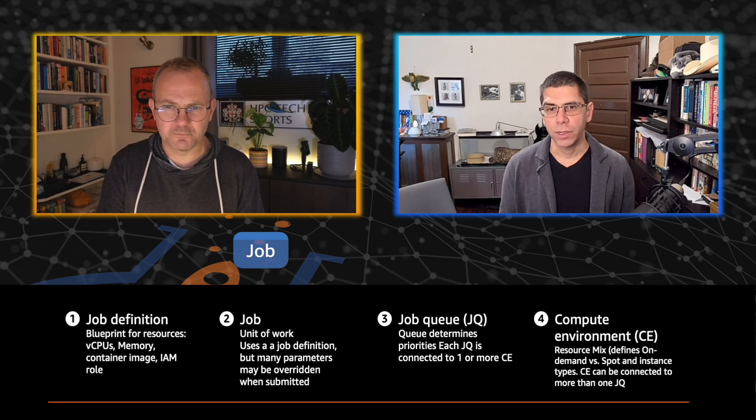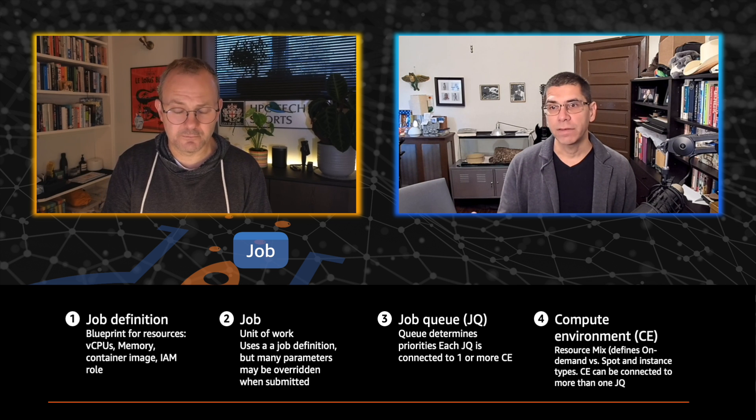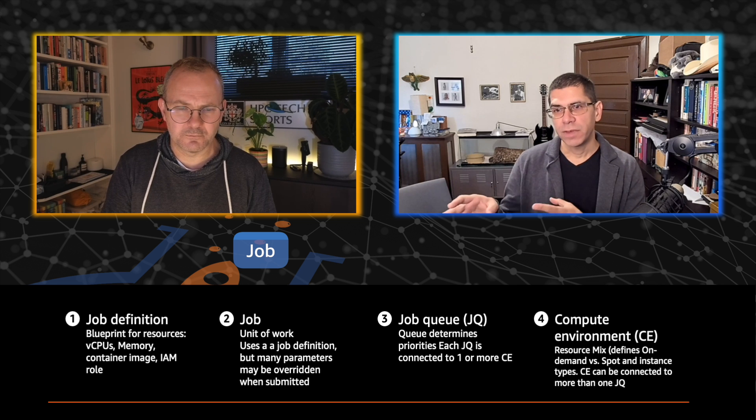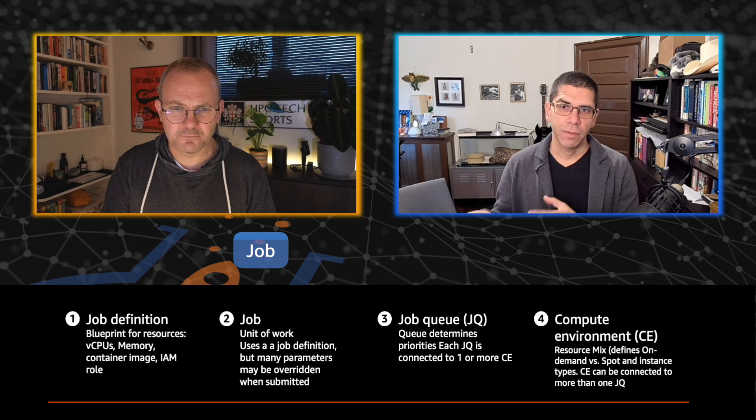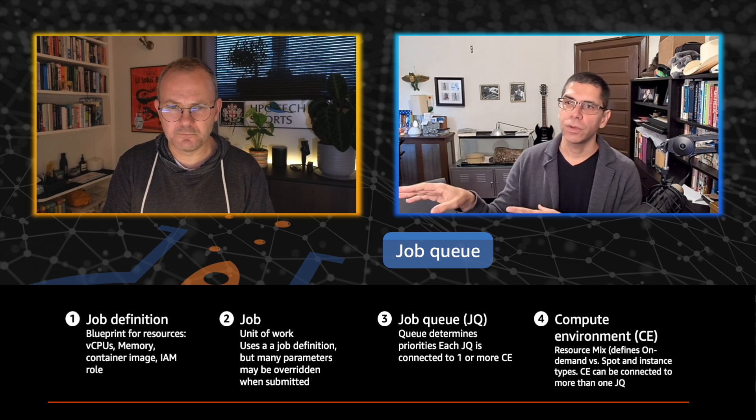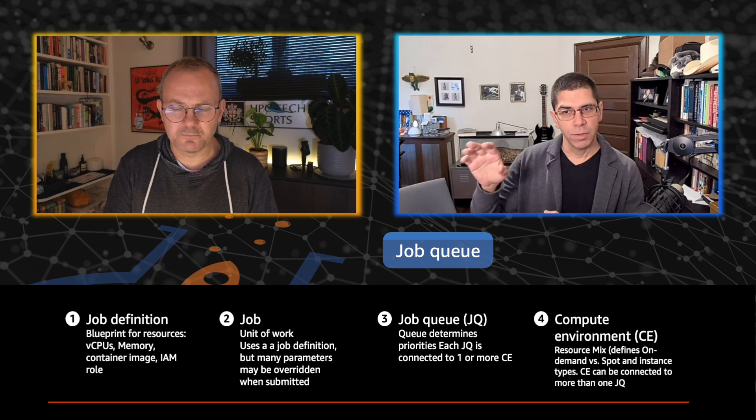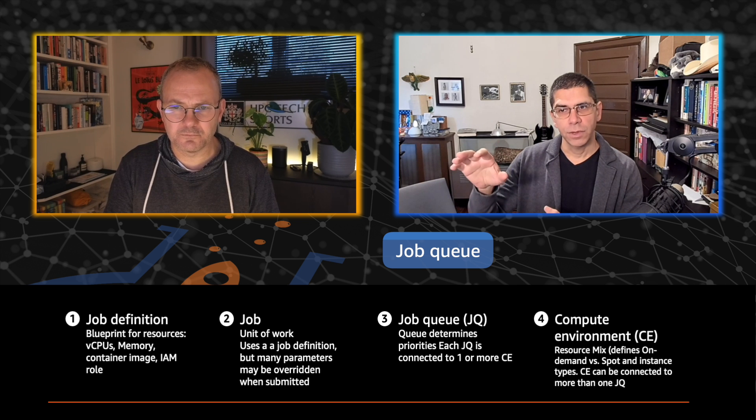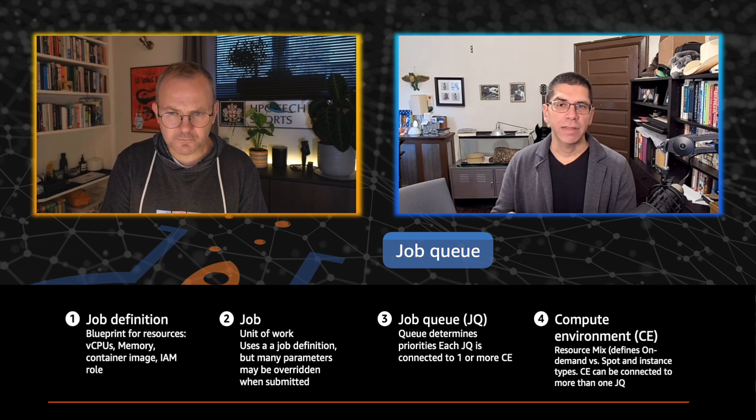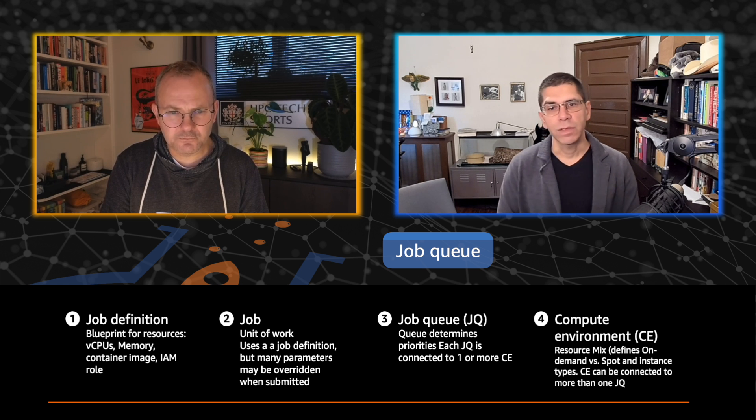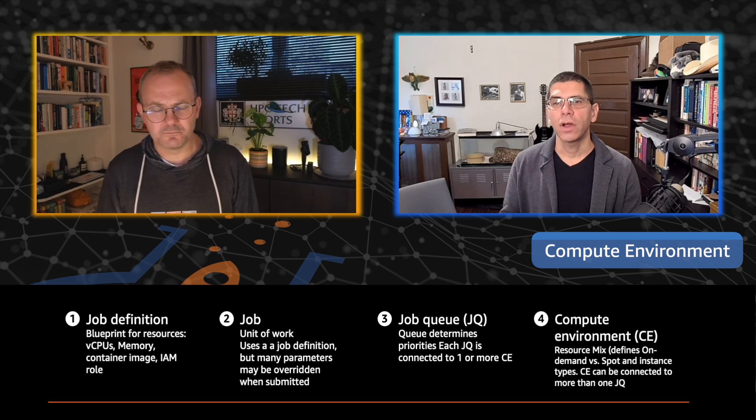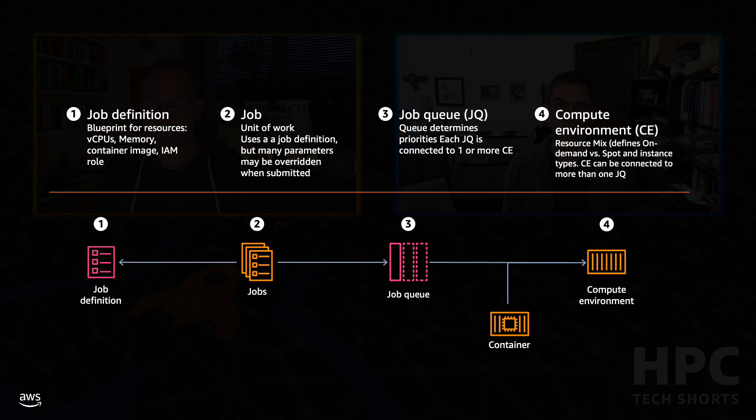A job is a unit of work - an actual request. As opposed to defining a way to process an image, a job represents processing this specific image right now. You submit the job, point at the job definition, and point to a job queue. The job queue determines the priority and ordering of things dispatched into your AWS compute resources. Those compute resources are controlled by a compute environment, where you define the resource mix - what sort of instances you need to perform your work and whether to use spot.